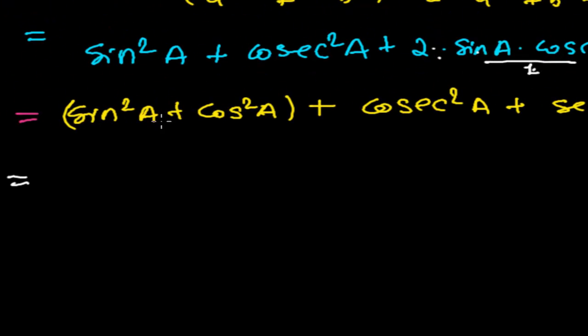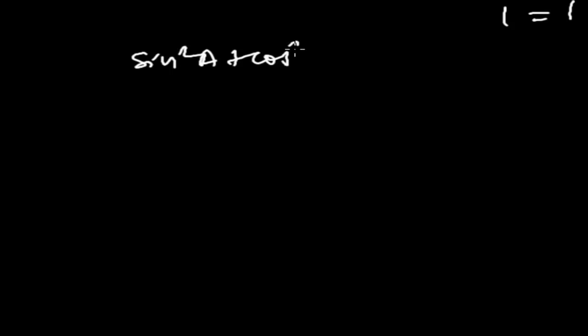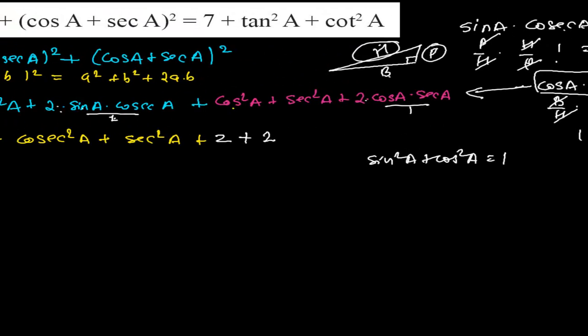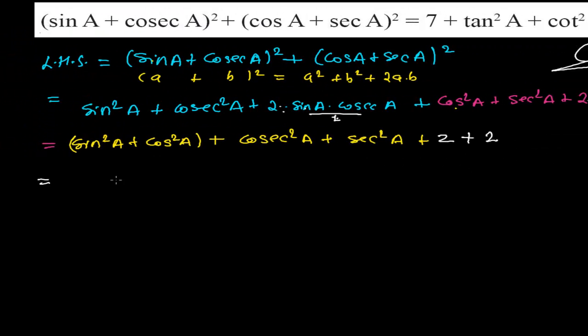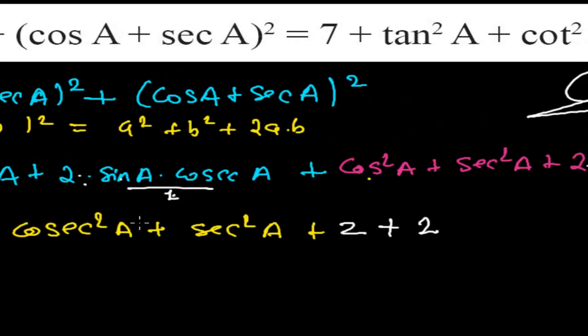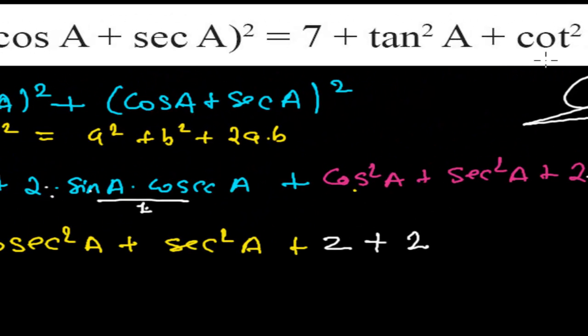Now, sin²a + cos²a is another identity we have learned: sin²a + cos²a = 1. So this gives us 1, and 2 + 2 = 4, so we have 1 + 4 = 5 so far.